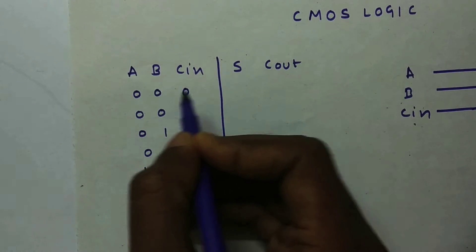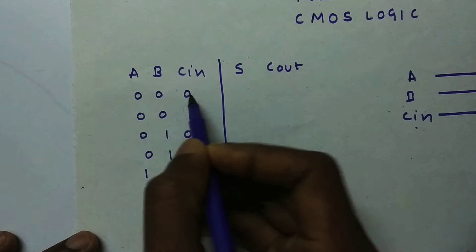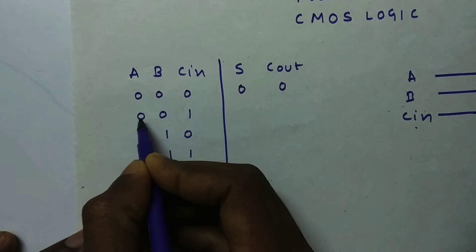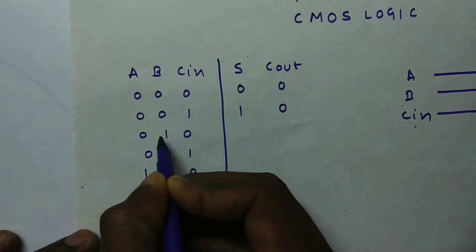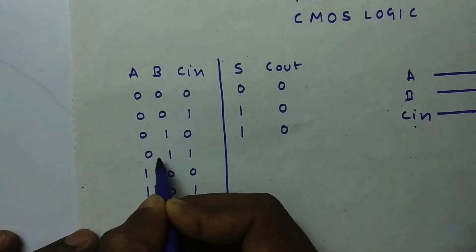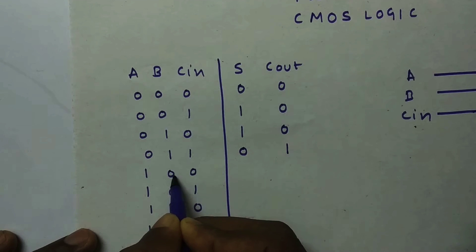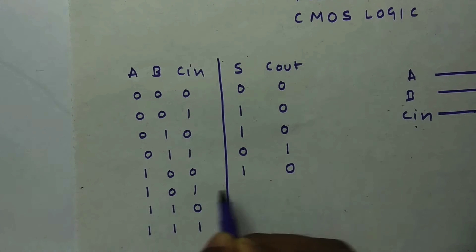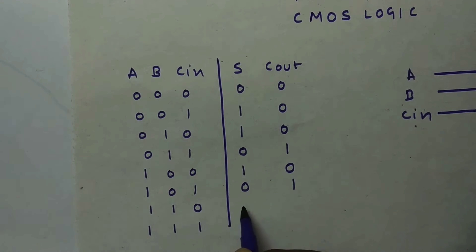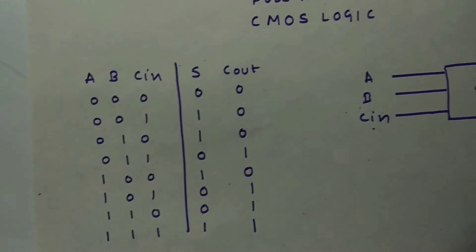Let's find out the Sum for each combination. 0+0+0 = Sum 0, Cout 0. 0+0+1 = Sum 1, Cout 0. 0+1+0 = Sum 1, Cout 0. 0+1+1 = Sum 0, Cout 1. 1+0+0 = Sum 1, Cout 0. 1+0+1 = Sum 0, Cout 1. 1+1+0 = Sum 0, Cout 1. 1+1+1 = Sum 1, Cout 1.